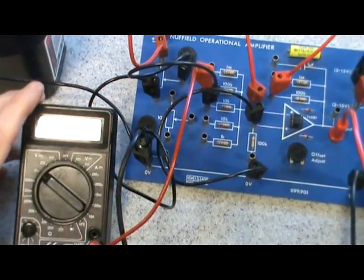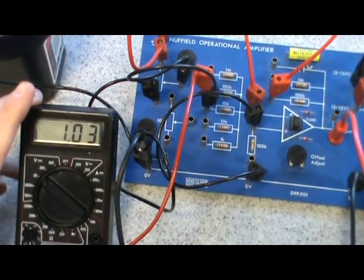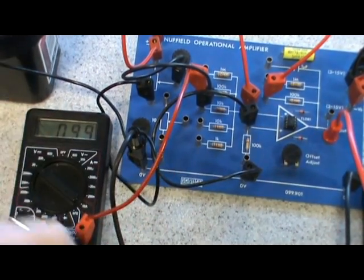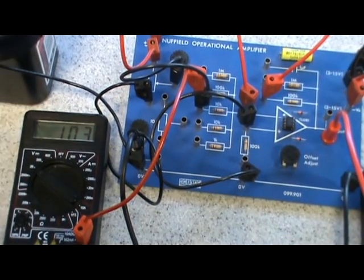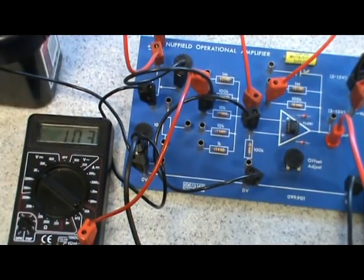So, you can see that decimal point there. So, 1.02 at the input, and 10.2 at the output. Again, I can keep increasing this.